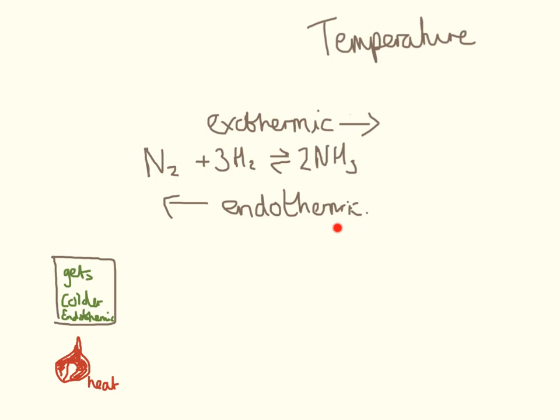So if we heat this up, it's naturally going to go in this direction here, which seems counterintuitive because we want to produce ammonia, so we want to be forcing it in this direction. But heating up will shift the equilibrium to this side.